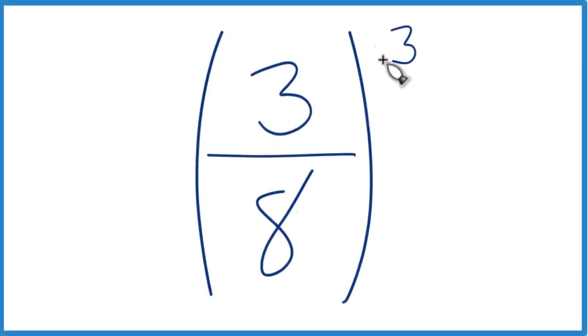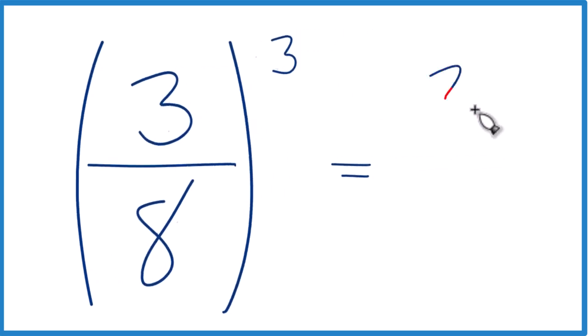Let's figure out what 3 eighths to the third power, or you could call it 3 eighths cubed, is equal to. So you can think of it like this. Take 3 to the third and we're going to put that over 8 to the third.